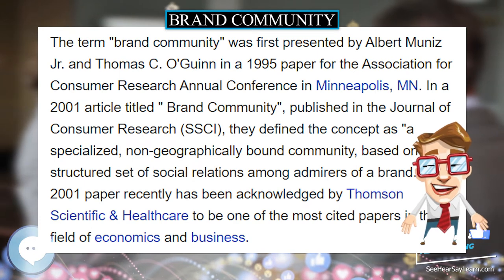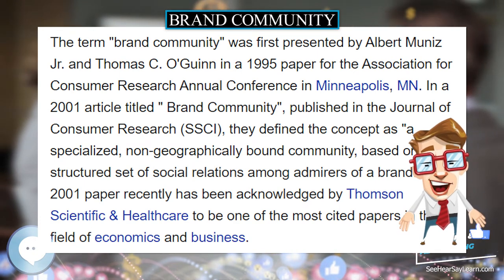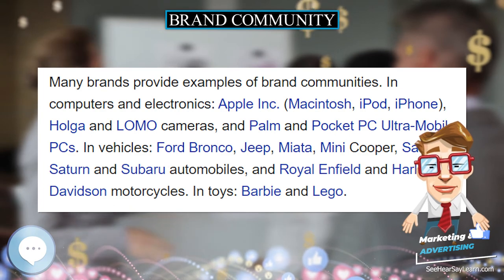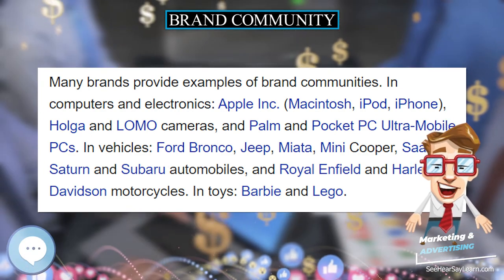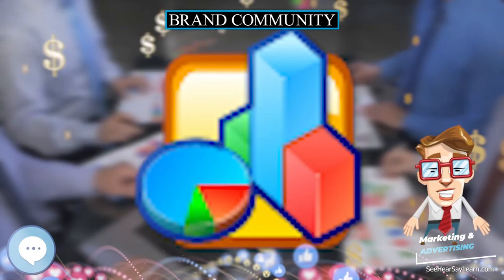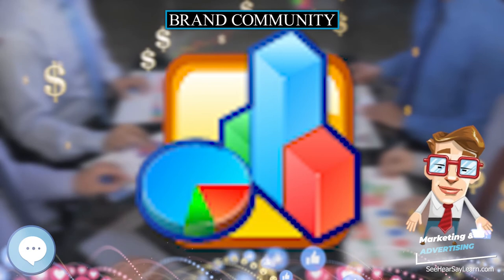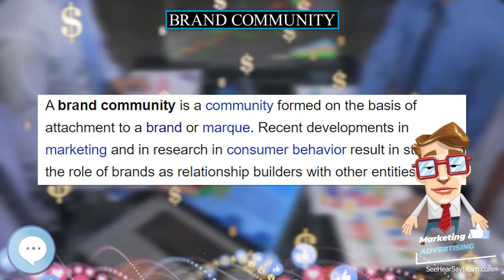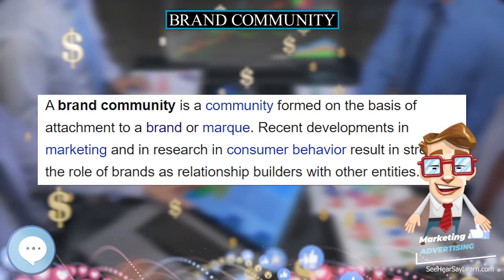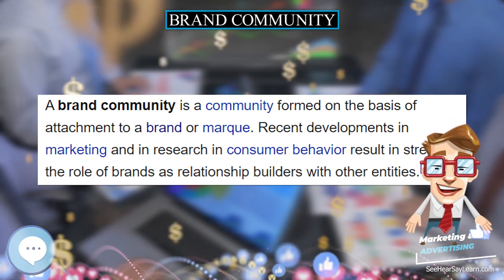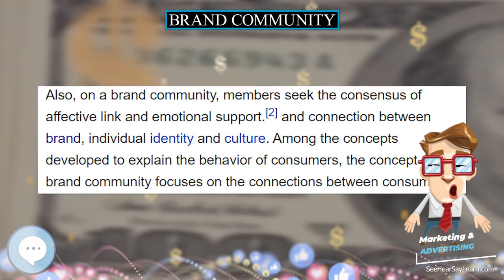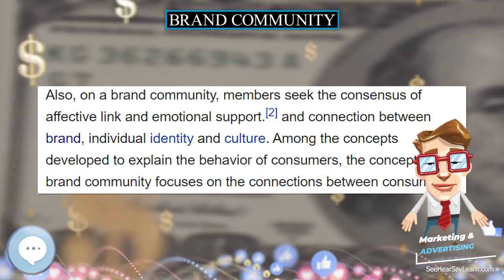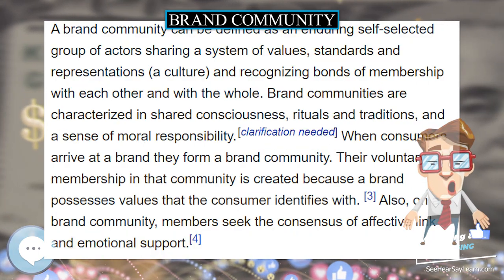Many brands provide examples of brand communities. In computers and electronics: Apple, Macintosh, iPod, iPhone, Holga and Lomo cameras, and Palm and Pocket PC ultramobile PCs. In vehicles: Ford Bronco, Jeep, Miata, Mini Cooper, Saab, Saturn, and Subaru automobiles, and Royal Enfield and Harley-Davidson motorcycles. In toys: Barbie and Lego.